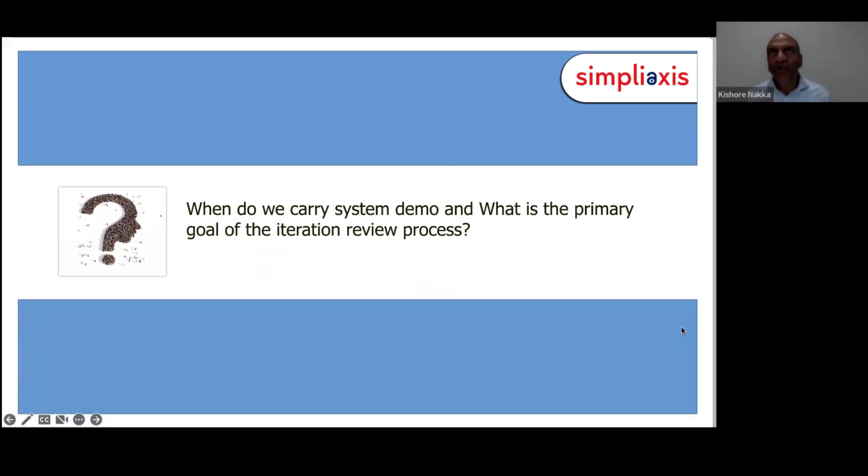System demo is a combined integrated demo. That means there are 10 teams on the train, Agile Release Train. We're integrating the work of all 10 teams. System demo happens once a sprint, once at the end of the iteration. There's something called PI system demo showing the work of all the 10 weeks that happens once in a PI.